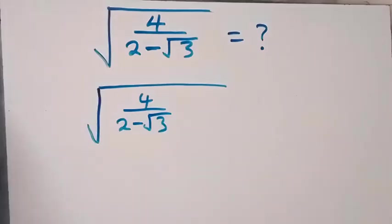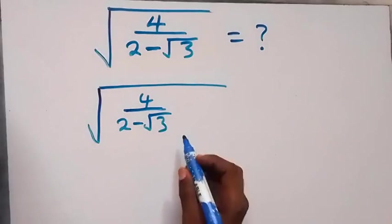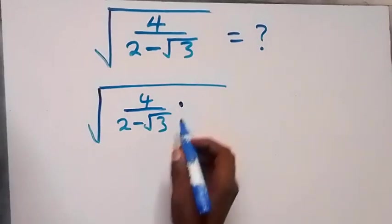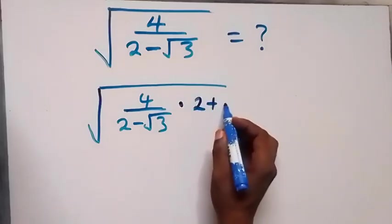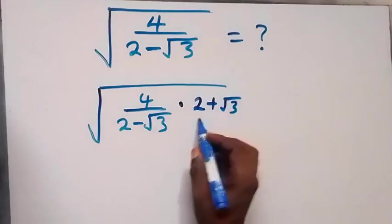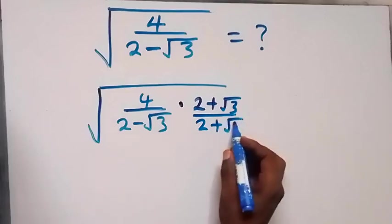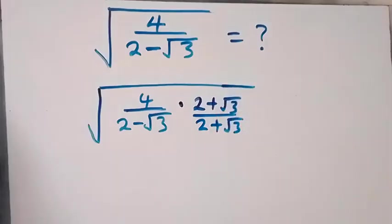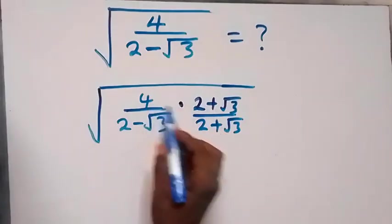Here we can rationalize this inside here and multiply with the conjugate and also divide by that, which is multiply by 2 plus root 3, then divide by 2 plus root 3.